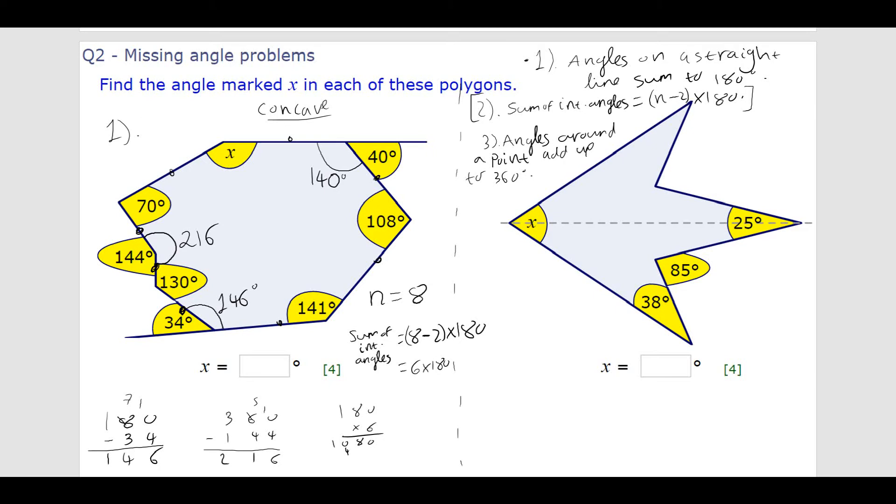So, altogether, all of the interior angles, 70, 216, 130, 146, 141, 108, 140, and x, will all add up to 180. So, to find x, I simply need to work out the sum of all the angles that I know, and subtract that from 1080. So, I'm going to say sum of known angles. So, let's work that out.